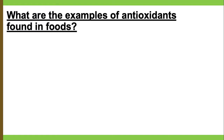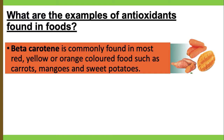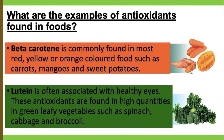Examples of antioxidant substances found in food: beta-carotene is commonly found in most red, yellow, or orange colored foods such as carrots, mangoes, and sweet potatoes. Lutein is often associated with healthy eyes. This antioxidant is found in high quantities in green leafy vegetables such as spinach, cabbage, and broccoli.